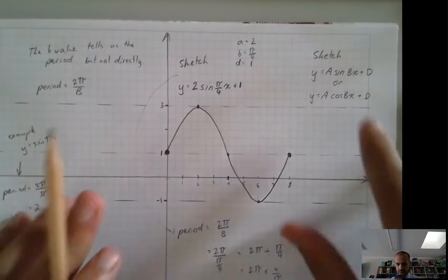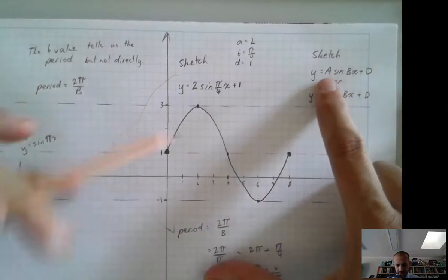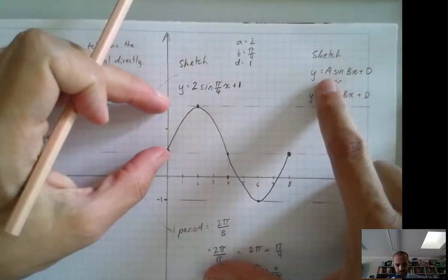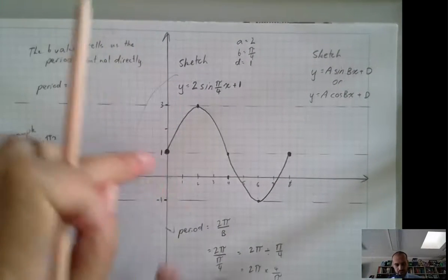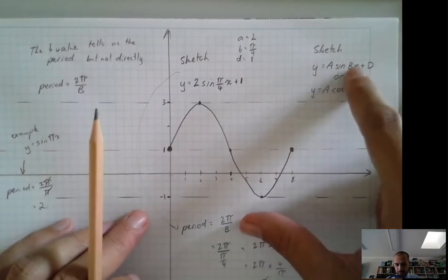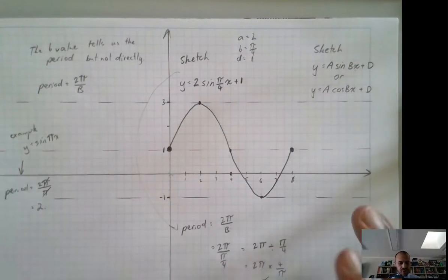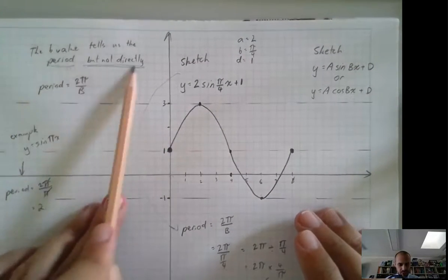So, lots to cover there. You've got the A value, which is controlling the amplitude. You've got the D value, which is controlling sort of where the middle value is. And you've now got the B value, which controls the period, but not directly.